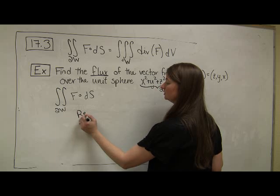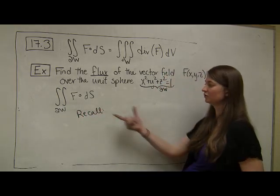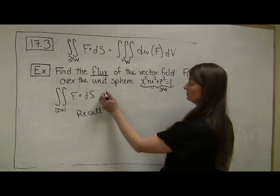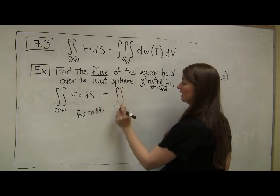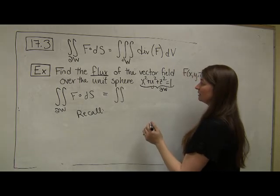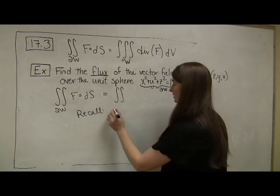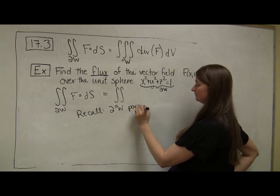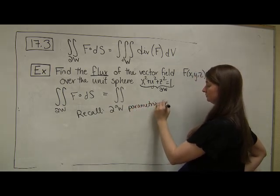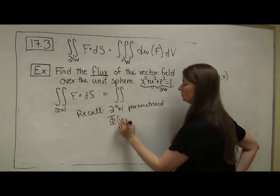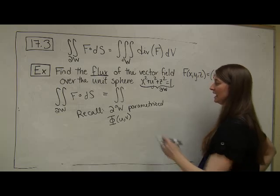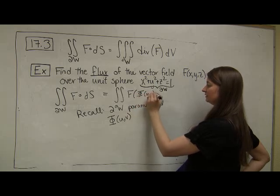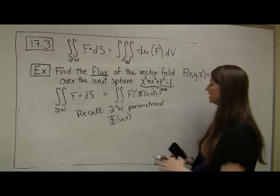Recall, and this is a formula that I think is an important formula to have memorized or at least have instantly available to you. It's something that we've talked about a number of times and it should be reviewed. First I'm going to have to parameterize this surface, so I need to come up with a parameterization of dw. My formula here is going to be given by f of phi(u,v) dotted with, what do I dot my phi(u,v) with?